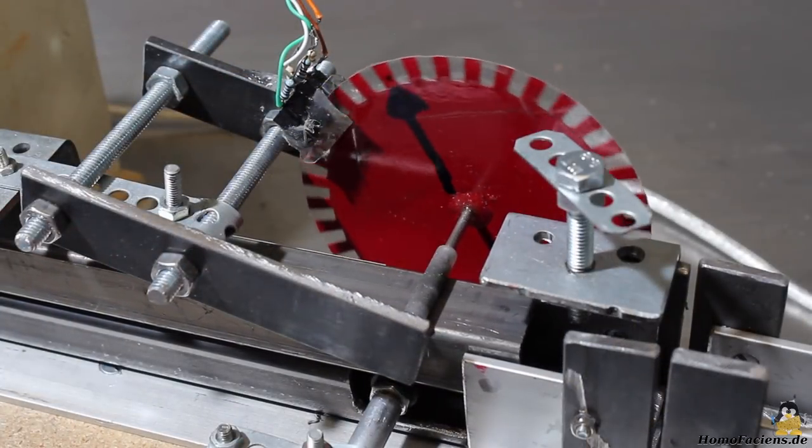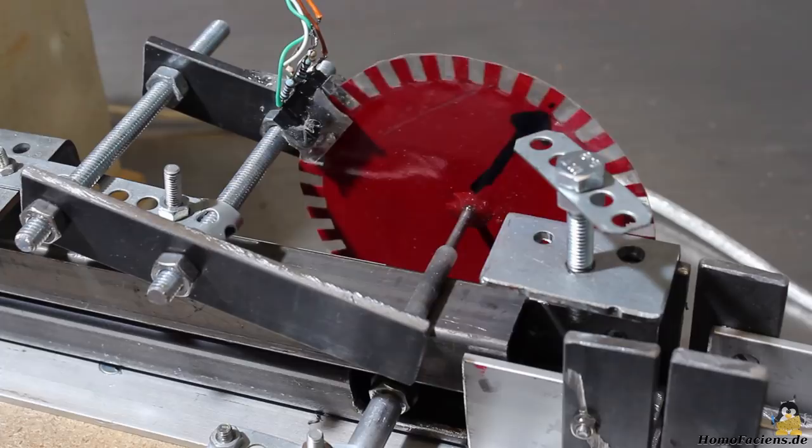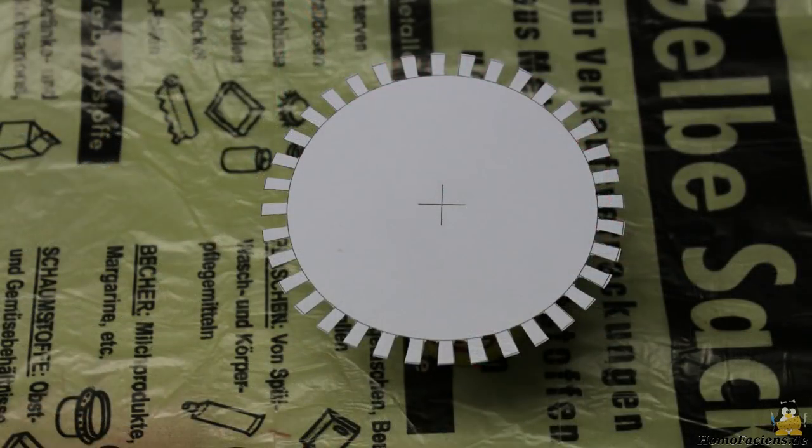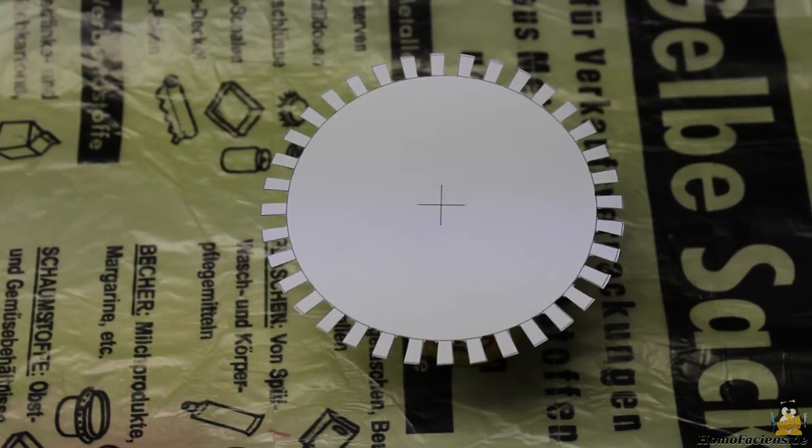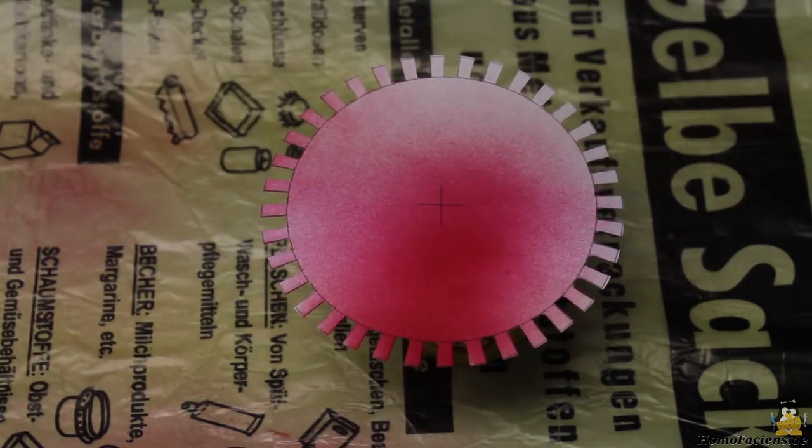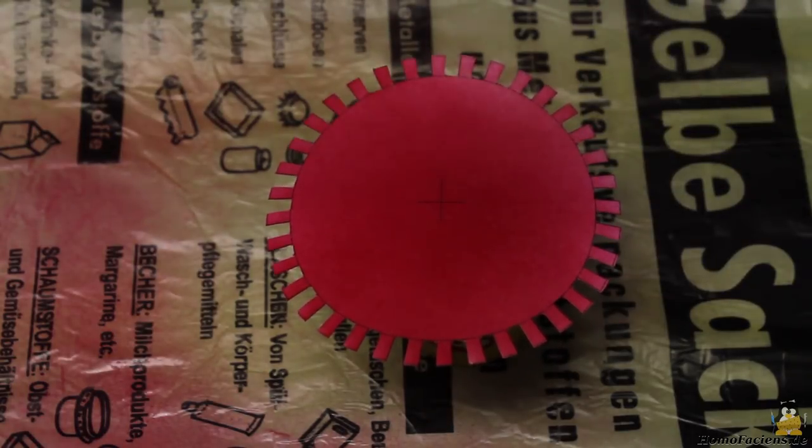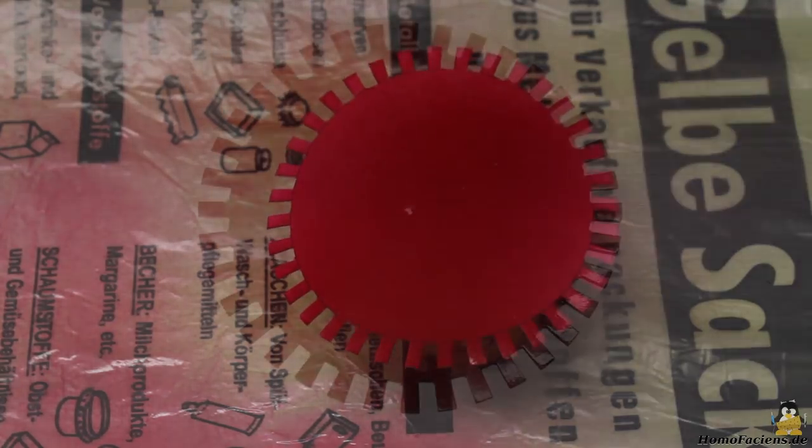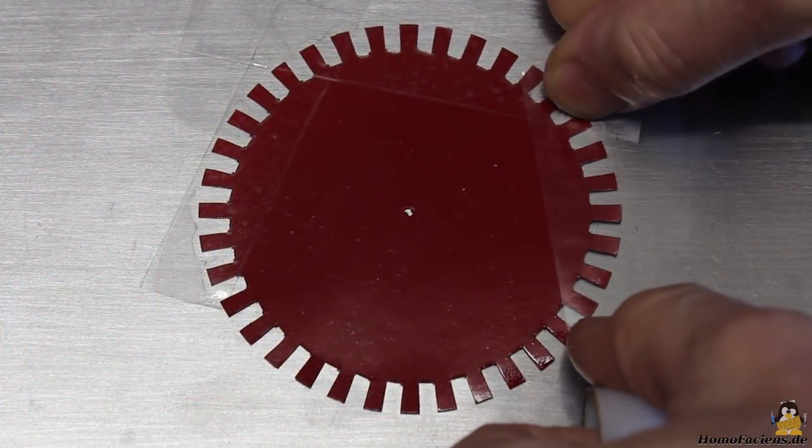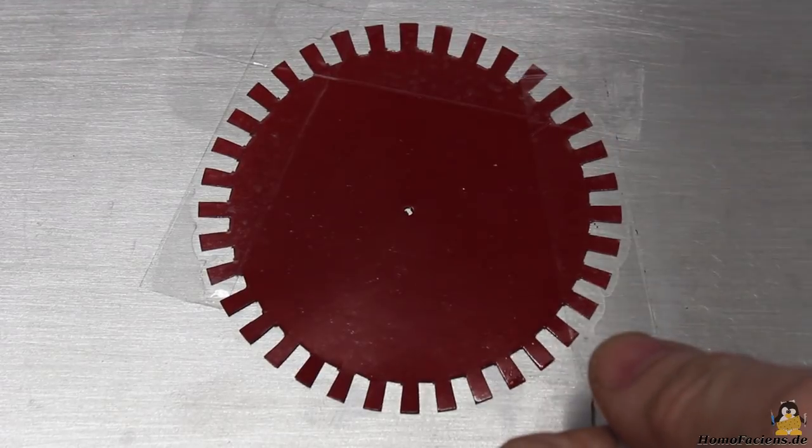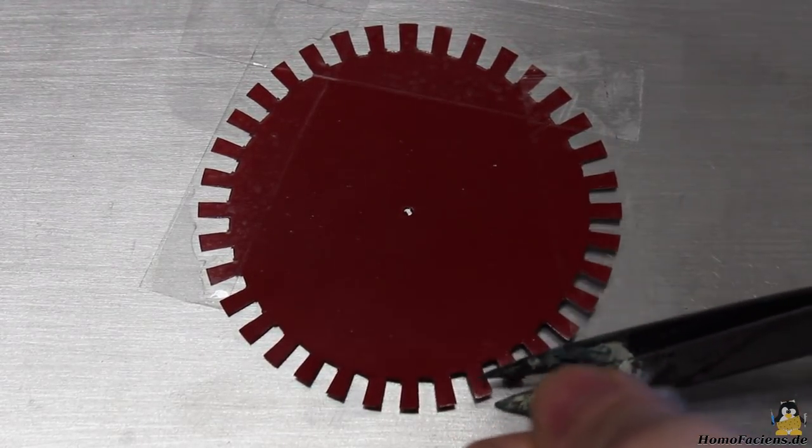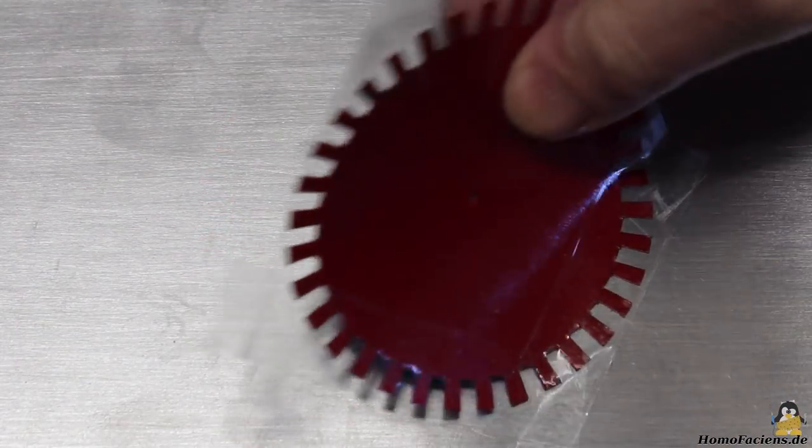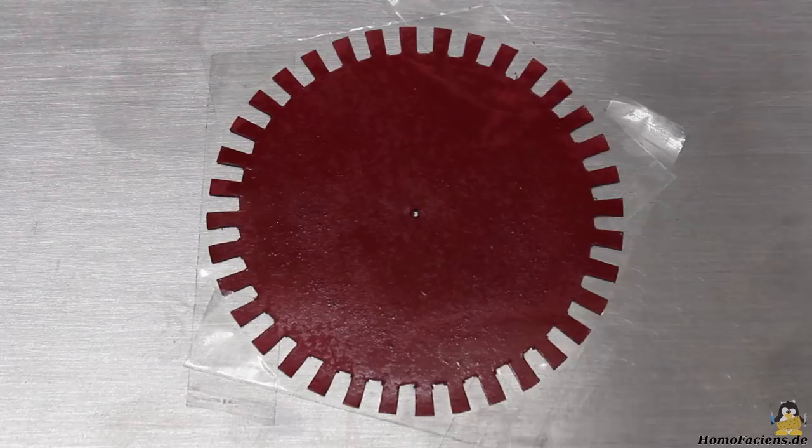Metering is done digitally, a sensor wheel is scanned by two transmissive light sensors. That sensor wheel is cut from paper and sealed with paint afterwards. The teeth are protected by adhesive tape from both sides.